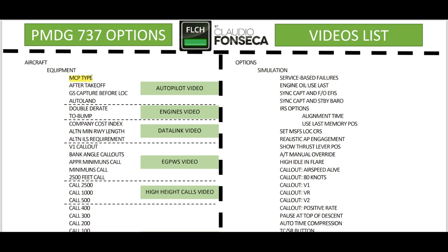On this video, we are going to talk about MCP type, after takeoff, GS capture before lock, and autoland. That's why I'm calling this the autopilot video. For example, another video is the engine video, and on that one I'm going to talk about double the rate and takeoff bump. So if you want to watch the video about the engines, just click here on the engine video.